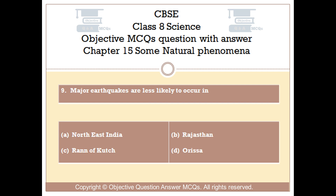Question number 9. Major earthquakes are less likely to occur in: Option A, Northeast India. Option B, Rajasthan. Option C, Rann of Kutch. Option D, Orissa.